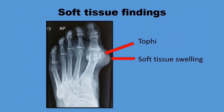The soft tissue findings on the x-ray of the affected part include soft tissue swelling, as is seen in this radiograph, and there is deposition of radio-dense tophi material around the affected joint.